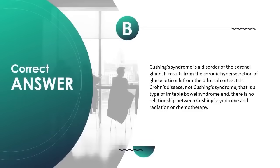Cushing's syndrome results from chronic hypersecretion of glucocorticoids from the adrenal cortex. It is Crohn's disease, not Cushing's syndrome, that is a type of irritable bowel syndrome, and there is no relationship between Cushing's syndrome and radiation or chemotherapy.